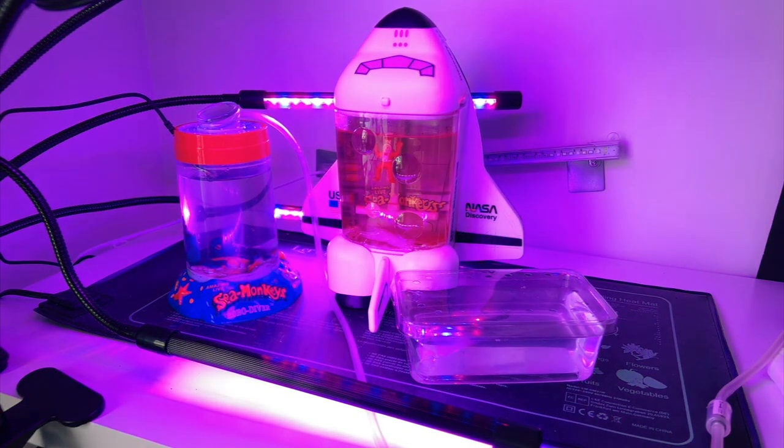The purple grow lights will help to promote the growth of cyanobacteria in their tank too, which will provide an additional food source for them, if they hatch. I'll check back in with you guys in a day or two from now, for an update on how things are going.